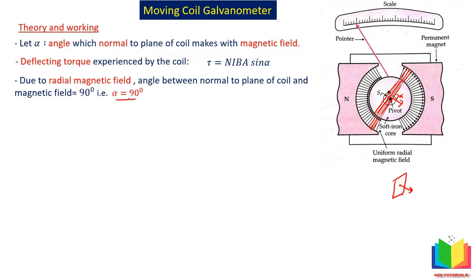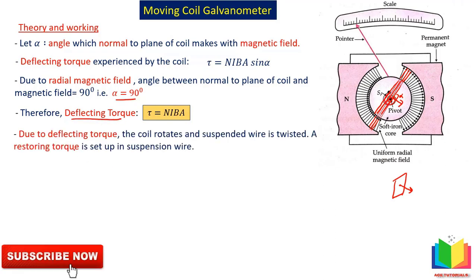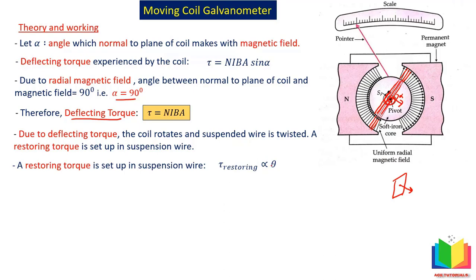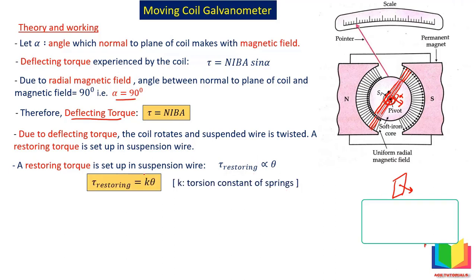Due to radial magnetic field, alpha will always be equal to 90 degrees — in whichever position the coil is, alpha will always remain 90 degrees. Therefore, the deflecting torque will be equal to N·I·B·A, because substituting alpha = 90° gives sin 90° = 1. Due to this deflecting torque, the coil rotates and the suspended wire is twisted, and restoring torque is set up in the suspension wire. The restoring torque value is directly proportional to theta — the more the spring twists, the more restoring torque develops. Here K is the torsion constant of the spring, which depends on the spring's properties. They need to use a spring with low K value — very soft springs with low K — because the lower the K value, the more sensitive the galvanometer.